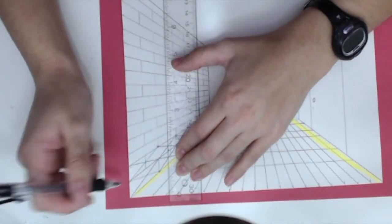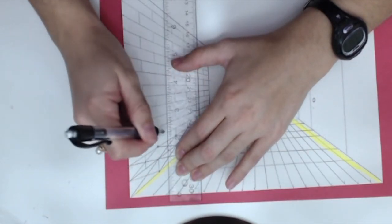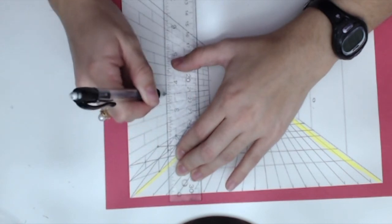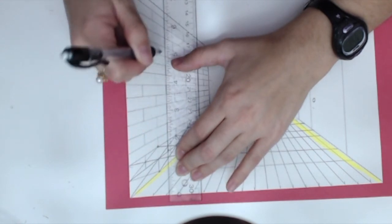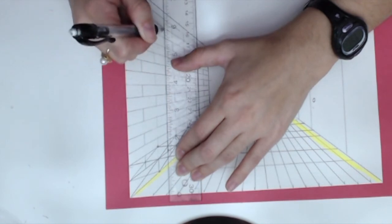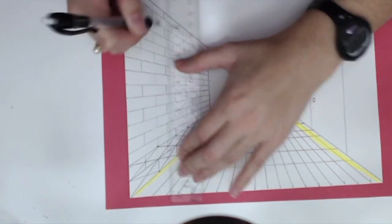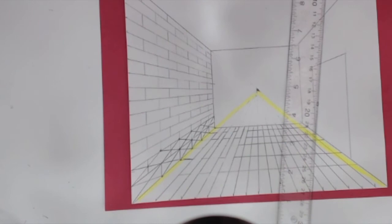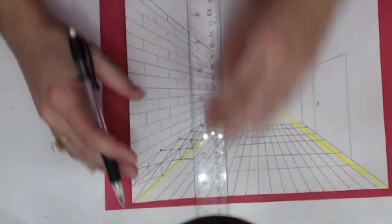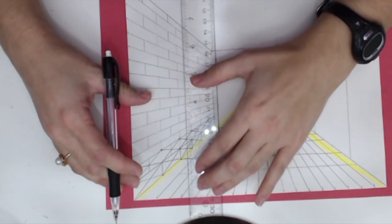So go ahead and just continue this process with those orthogonal lines, adding in those vertical lines to help create your brick wall. Remember to line those X's up, find those intersections, and just continue on with this trend.